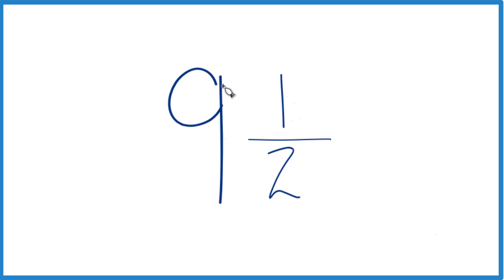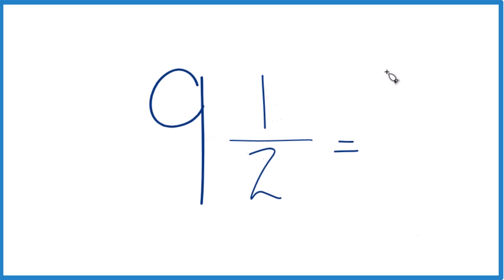Here's how you do it. Take the whole number, 9 times 2. 9 times 2 is 18. 18 plus 1, that equals 19.